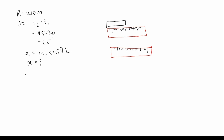So the real reading is equal to the given reading, that is 210 meters, plus delta L. We can find delta L using the formula: delta L is equal to L times alpha times delta T.